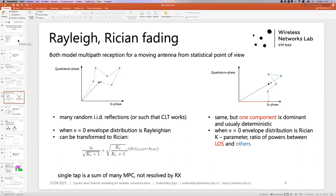Now, the second variant is Rician fading. And the scenario conceptually is the same. But there exists one dominant component. And it is usually considered deterministic. It corresponds to, for example, a line of sight path. And again, when velocity of antenna equals to one, the envelope distribution is Rician. And the parameter of the distribution is the ratio of powers between both components, highlighted and others combined.